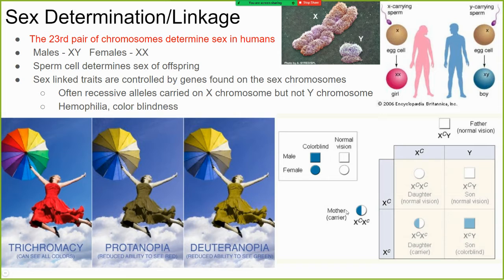Color blindness is a recessive allele found only on the X chromosome. Males only need to get one of these color blindness alleles to be color blind. Females, on the other hand, need to get two of these alleles — one from each X chromosome — to be color blind. So it's more common in males because it's easier to inherit one allele than two.